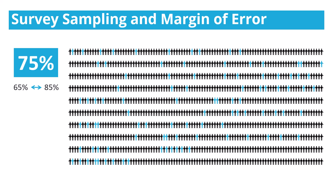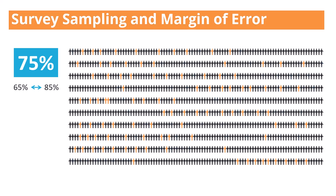Now, what if I go out and sample another 100 visitors — not the same visitors, a different group of 100? That means there's a 95% chance that the result for the number of visitors who were satisfied should be within plus or minus 10% of that 75% number I got before. In this case, 82% of this second sample was satisfied with their visit.